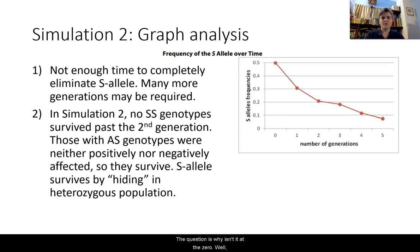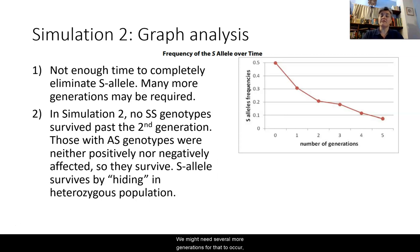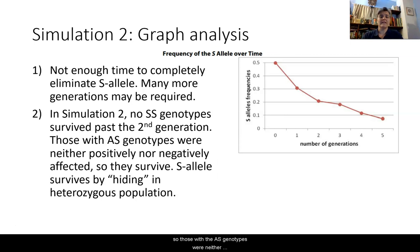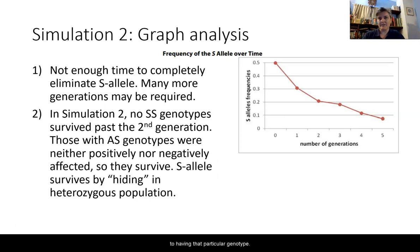Why isn't the S allele frequency at zero? Part of it is that not enough time may have passed to completely eliminate it — several more generations may be needed, but the long-term trend indicates that will eventually happen. In simulation two, there is no SS genotype surviving past the second generation. Those with AS genotype are neither positively nor negatively affected, so they have no advantage or disadvantage. The S allele still survives by hiding in the heterozygous population.